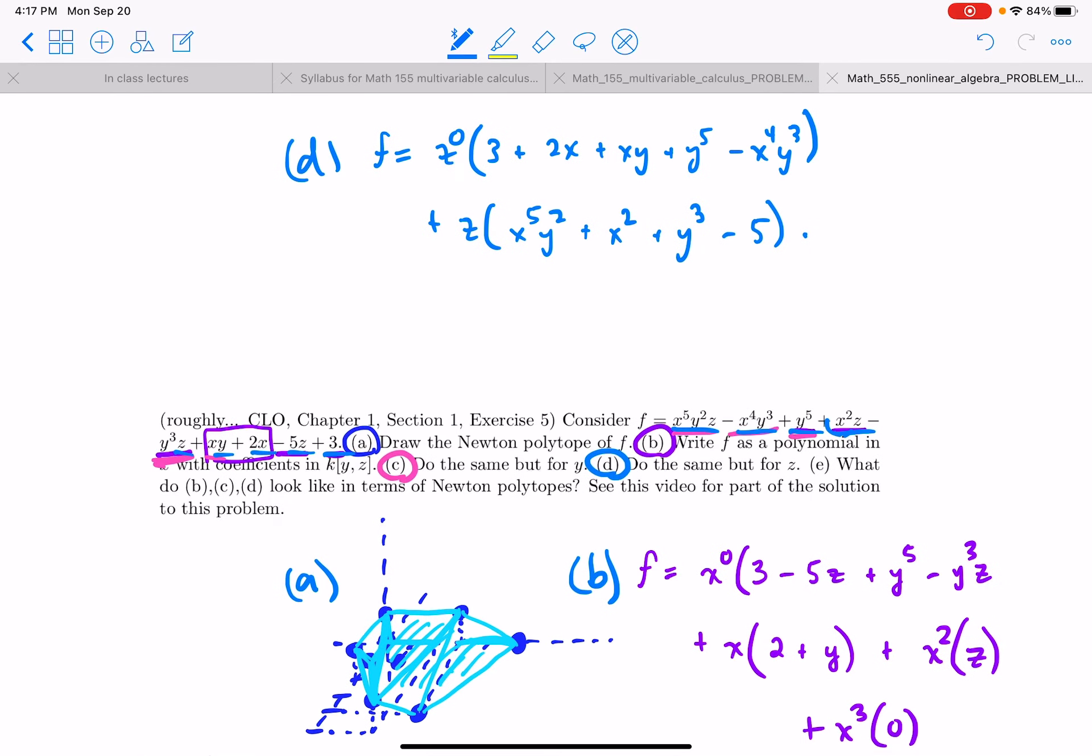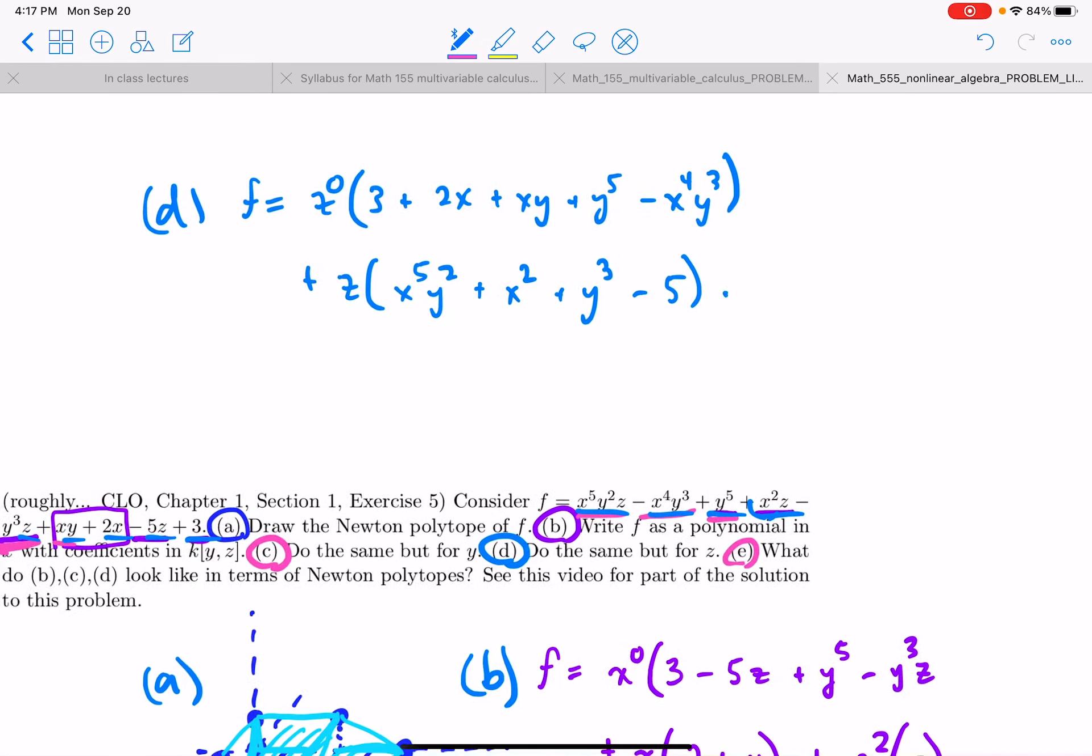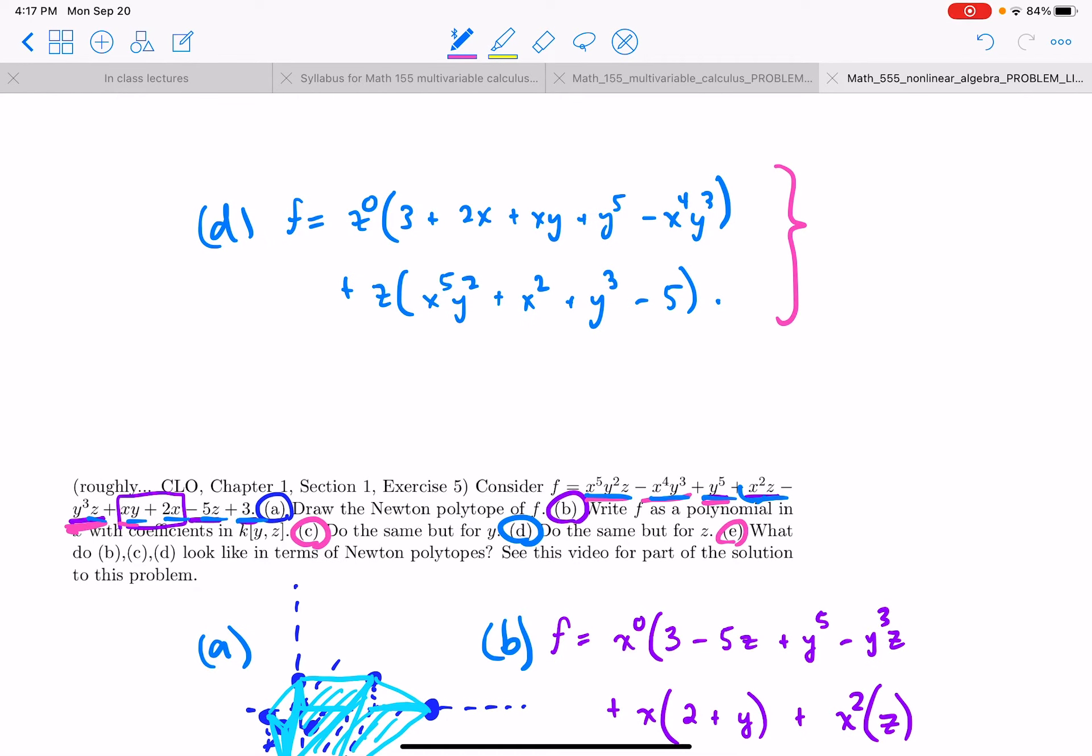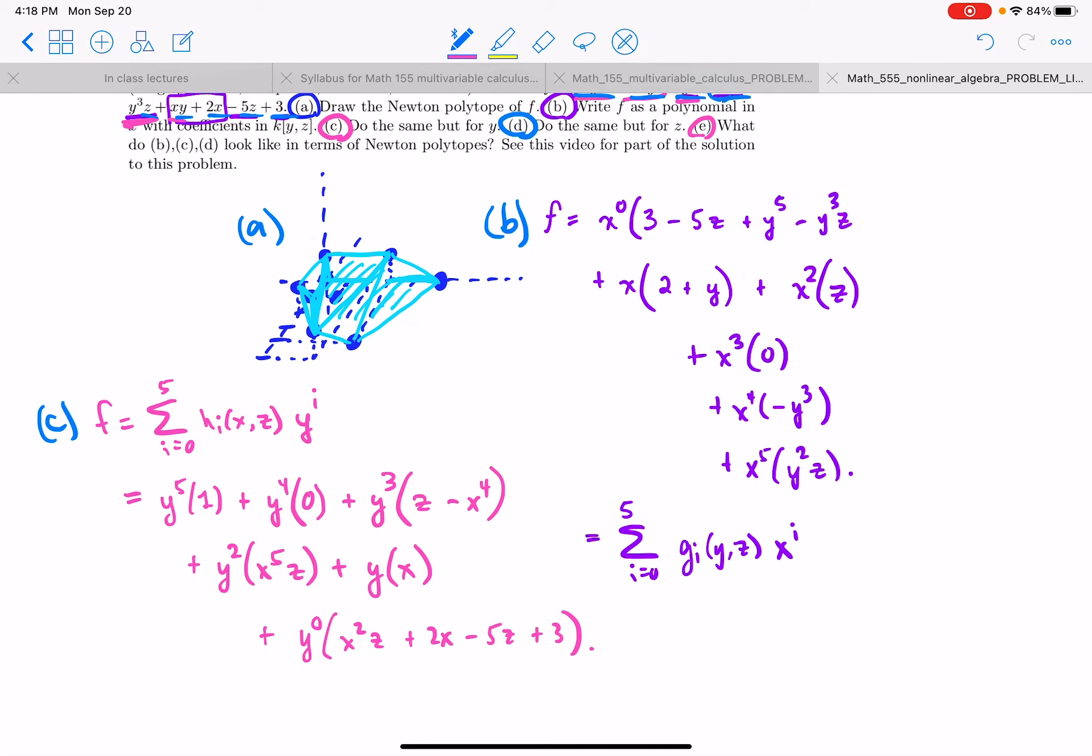Okay. Part e. What do b, c, and d look like in terms of Newton polytopes? Okay. So let's take this one. Looking at it as a polynomial in z, we just have at the zero and one. And the coefficients are now polynomials in x and y, but the Newton polytope doesn't see the coefficient. So Newton polytope of f as a polynomial in z is just that.